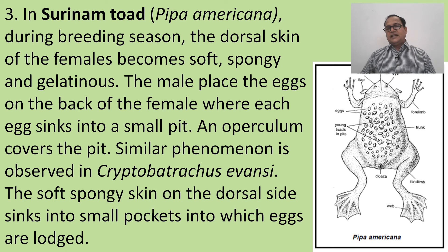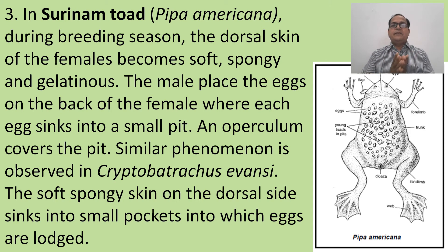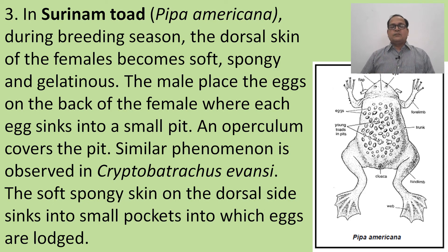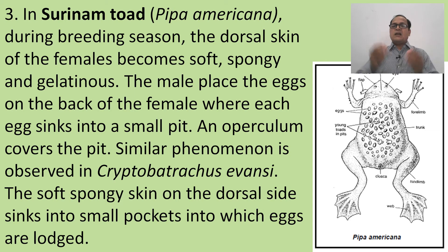In the Suriname toad, Pipa americana, during breeding season the dorsal skin of the female becomes soft, spongy and gelatinous. The male places the eggs on the back of the female, where the eggs sink into small pits and an operculum covers each pit, protecting them from enemies. A similar phenomenon is observed in Cryptobrancus evansi, where spongy skin on the dorsal side forms small pockets into which eggs are lulled.